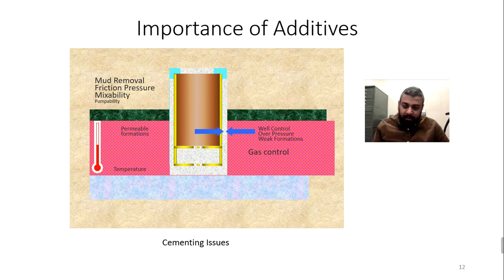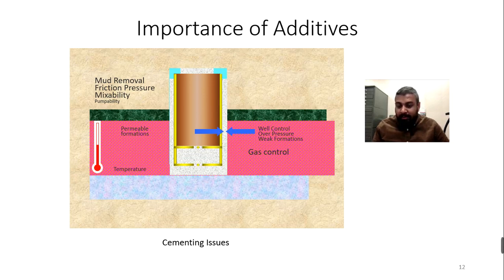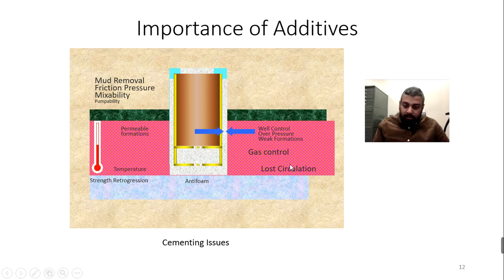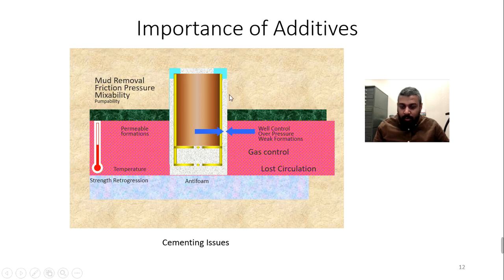When doing the primary cementing job, at the surface you might need different properties, but as you go deeper you need different properties. The key properties include thickening time, retardation, viscosity, and so on. There's also a chance of loss circulation, and once the cement is set it may lose strength, create micro-channels, or fail to hold the casing properly. Additives help us solve all these problems.